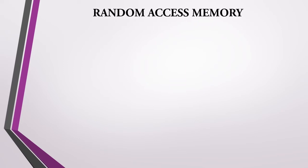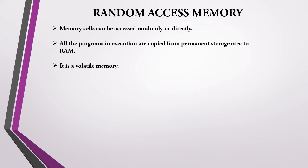Random access memory accesses data randomly. The memory is a collection of cells containing data, and these data can be accessed randomly or directly. Every cell has a unique address, like your house has an address. All cells of the memory have different addresses. If data is stored at location 2000, the control will go directly to address 2000 and access the data — it will not move sequentially. So in RAM, data is accessed randomly.